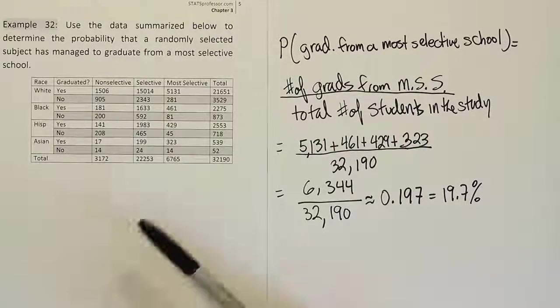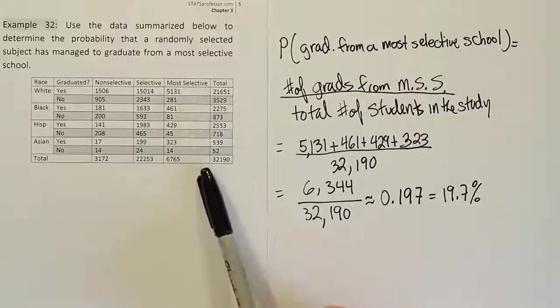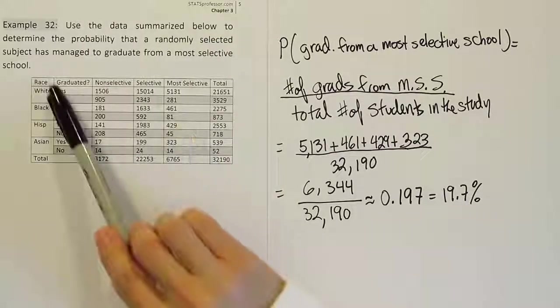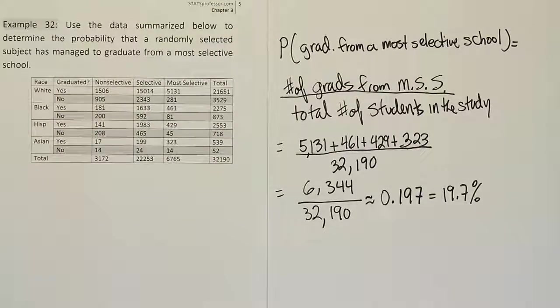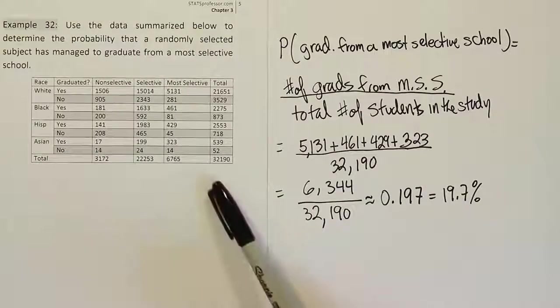If they wanted to narrow the total to just the people attending most selective schools, they would have had to state that very clearly in the problem and they haven't done that. So make sure that absent any clear directions, you choose the grand total for the total.